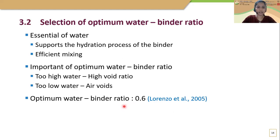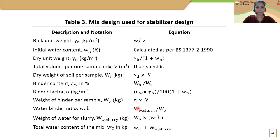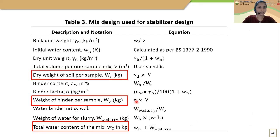In this research, the water-binder ratio was selected as 0.6. For selection of optimum binder content, four different binder contents were selected: 10%, 15%, 20%, and 25%. Mix design was conducted on those binder contents. Based on unconfined compressive strength tests and constant volume swell pressure tests, the optimum binder content was selected. Table 3 shows the mix design used for stabilizer design, from which dry weight of soil per sample, weight of binder per sample, and total water content of the mix were calculated.